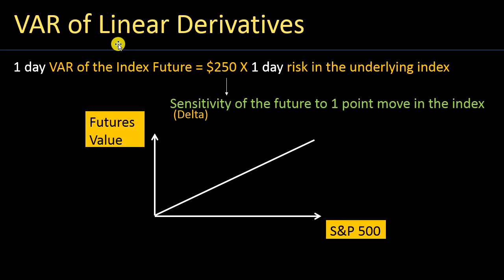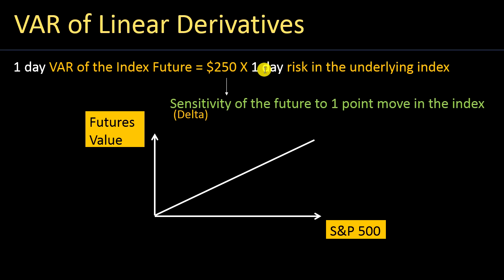When we talk about linear derivatives — if you're not familiar with them, you could look at the video on linear derivatives — what we are saying is that the risk factor of the derivative, in other words the factors that impact the price of the derivative, for an index future, the value is simply related to the value of the S&P 500 index. If the S&P 500 moves by one point, the futures value will move by one point multiplied by its multiple of $250, so the future moves by $250. That's a linear derivative — the movements are linear.